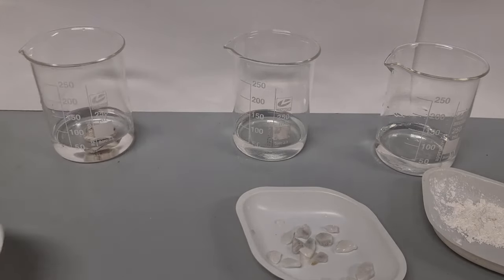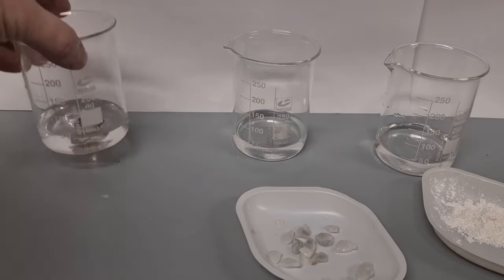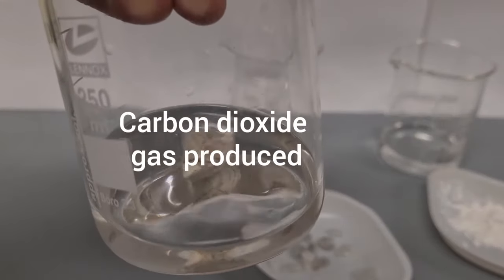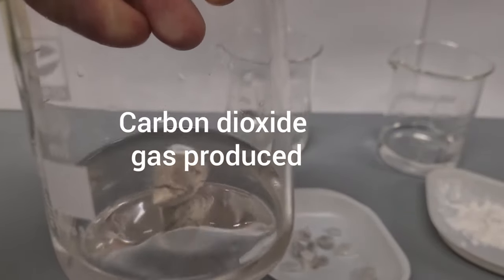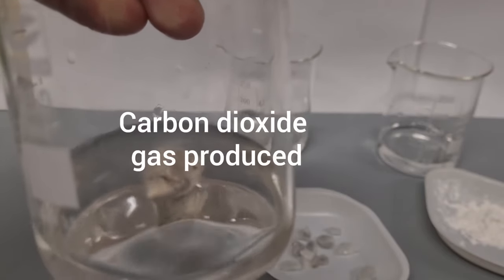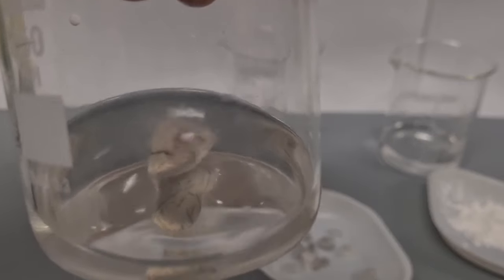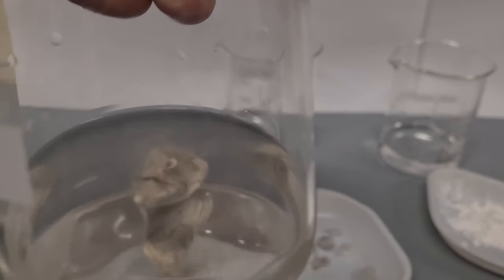So when I put in the big piece of calcium carbonate, we can see fizzing, so a chemical reaction is happening. Bubbles of carbon dioxide gas are being produced. This is a slow chemical reaction.